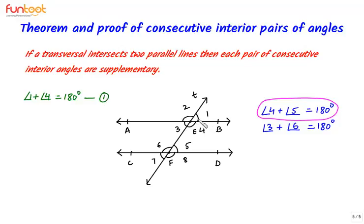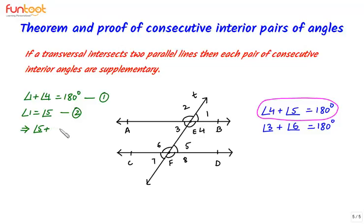Also, from the corresponding angle axiom, we know that angle 1 equals angle 5. So writing angle 1 equals angle 5 — call this equation 2. From equations 1 and 2, substituting angle 5 in place of angle 1 in equation 1, we get: angle 5 plus angle 4 equals 180 degrees, or angle 4 plus angle 5 equals 180 degrees. This is what we needed to prove.